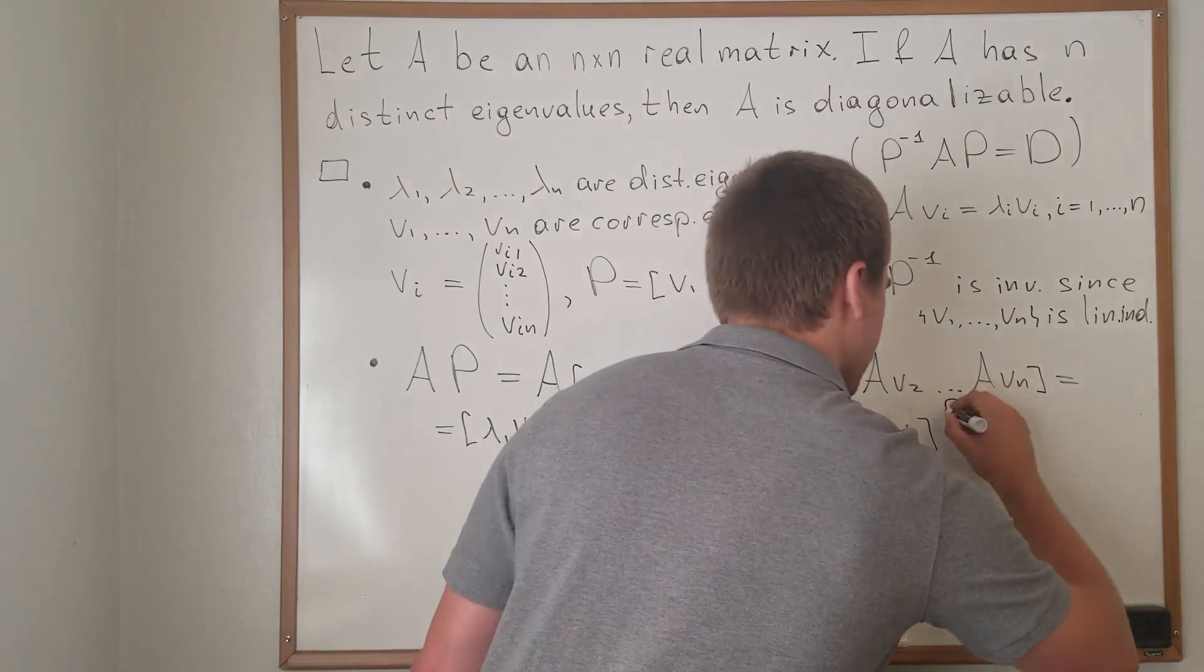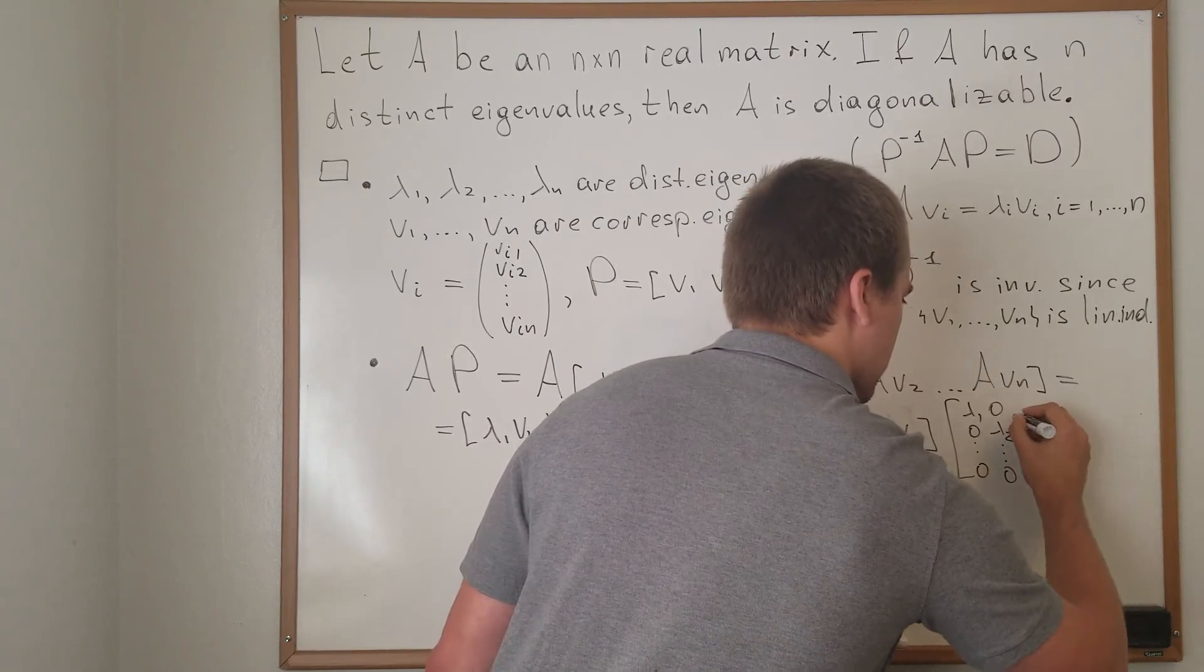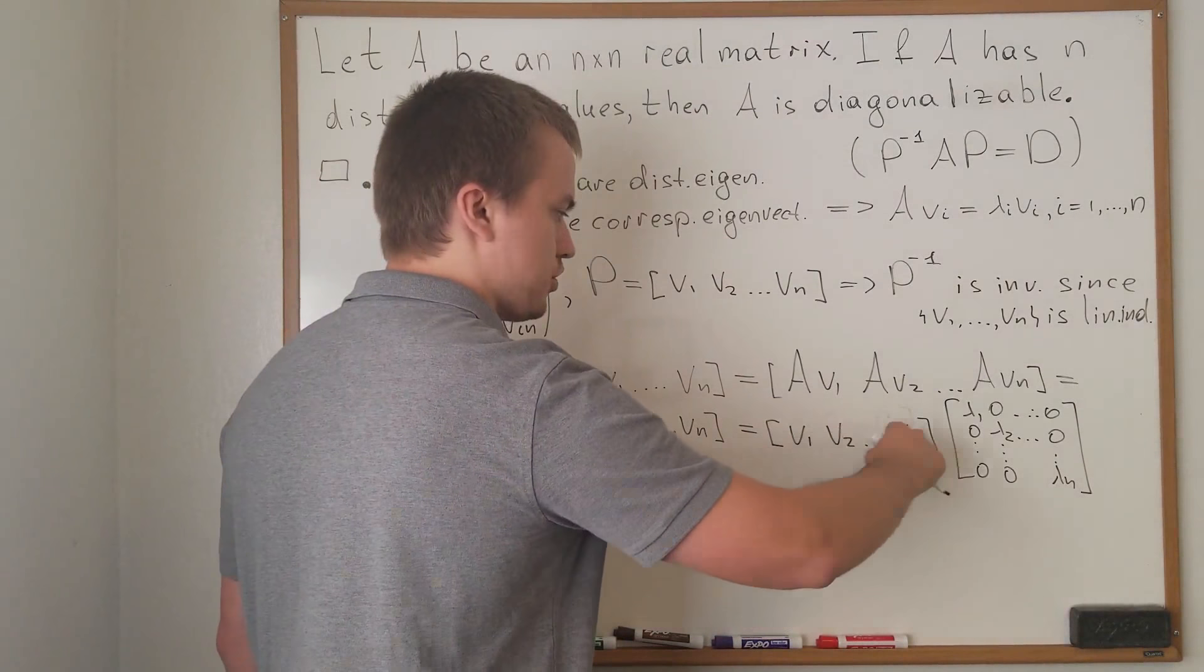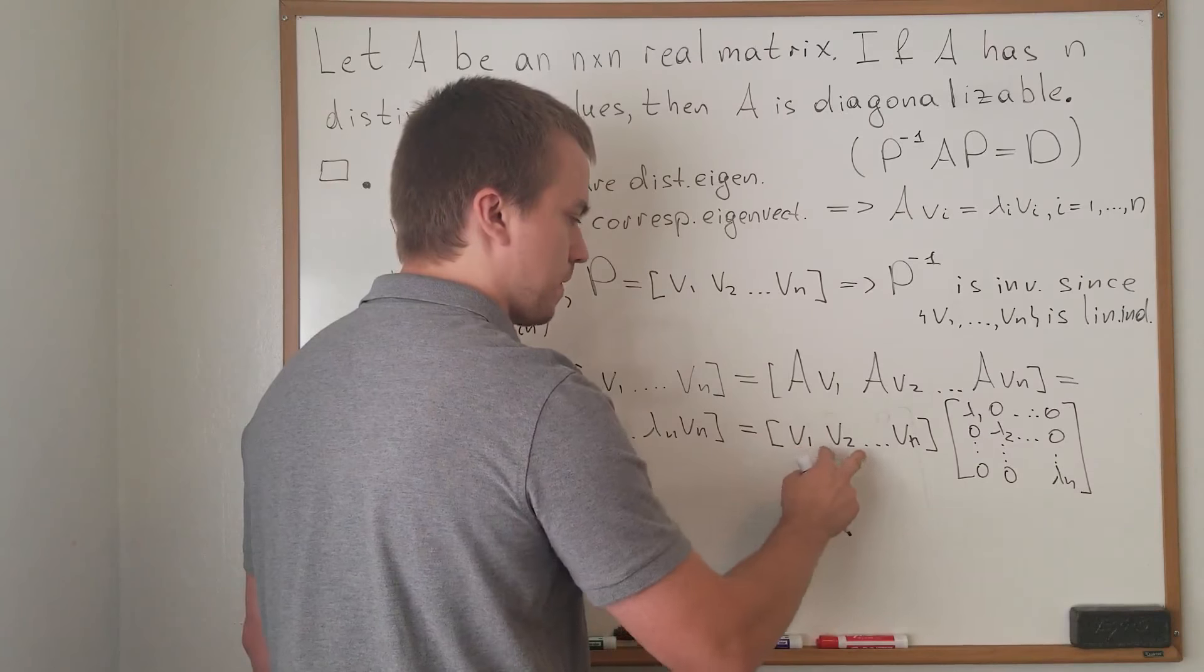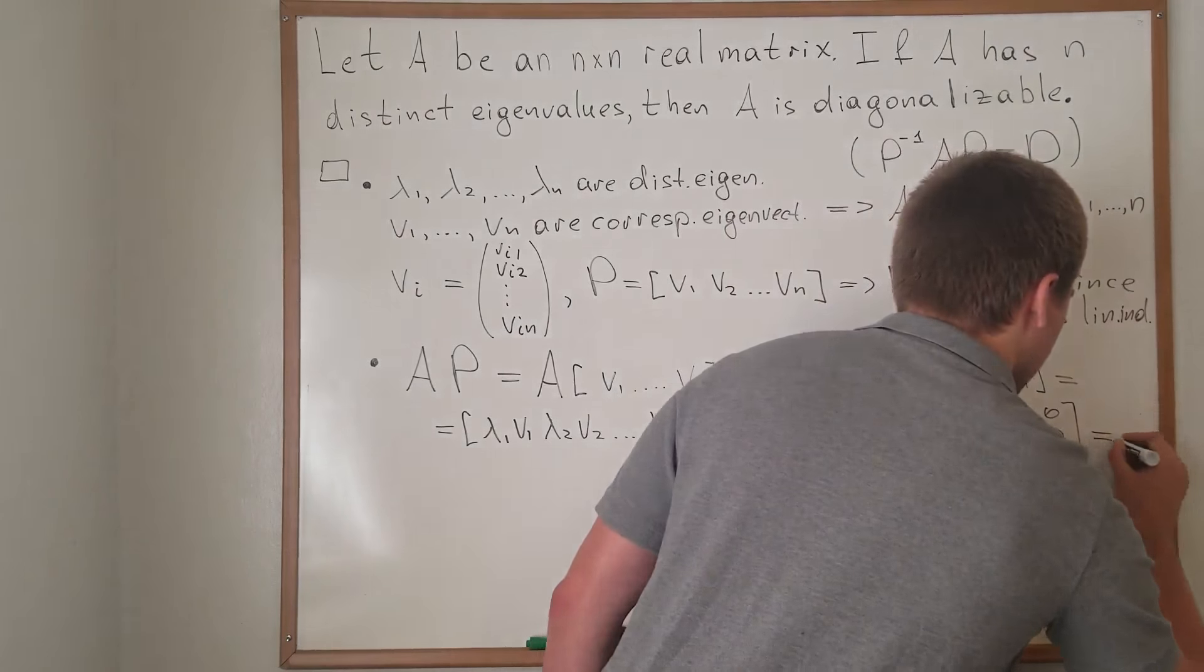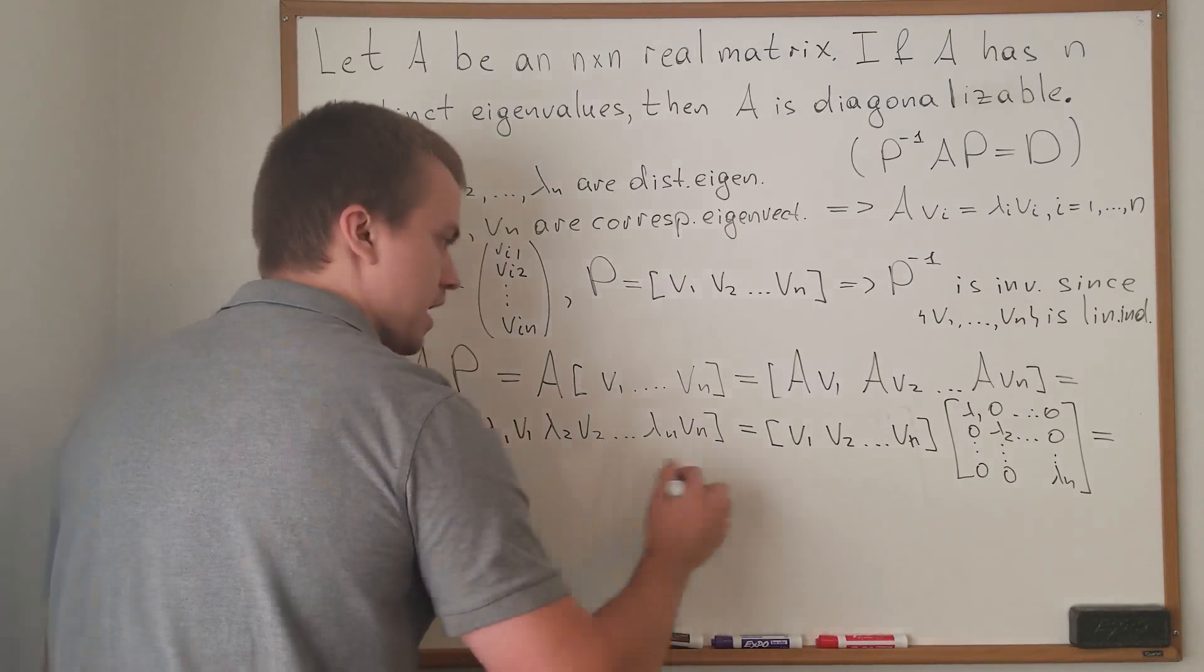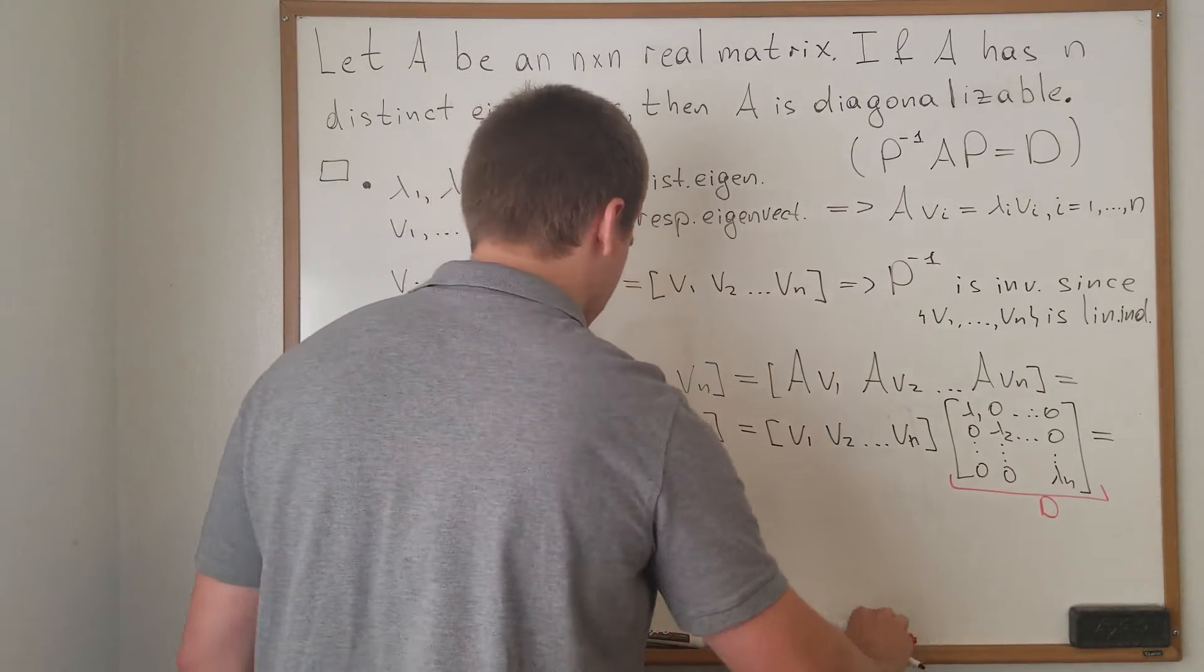...times by matrix lambda one zero zero, zero lambda two zero, and zero zero lambda n. We can see the first row by first column, we're going to get all numbers except V1 is going to equal zero, and you're going to see this by computation. Here I can see my V1, Vn, what is my V1, V2 up to Vn—it's my matrix P. And what is this one matrix? Let's name this matrix to be my matrix D. Then I have P times D.